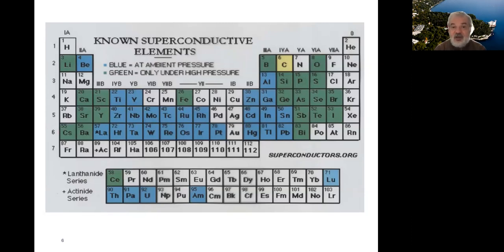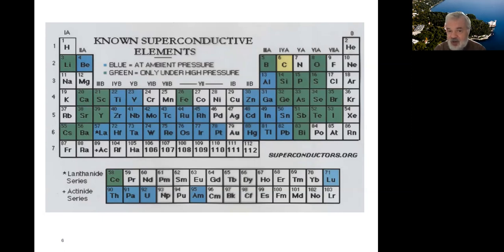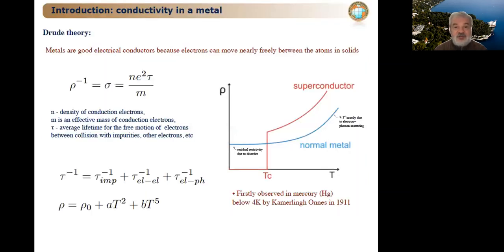Very soon it was discovered that some alloys can also superconduct. People started with so-called binary alloys, sometimes referred to as A15 in literature. The best superconducting material from binary alloys — niobium-germanium — possessed a superconducting transition temperature of about 24–25 Kelvin. This is a typical plot of resistivity as a function of temperature.